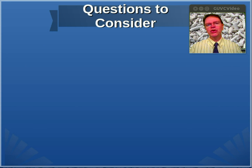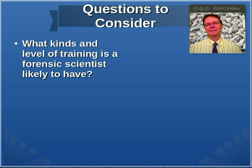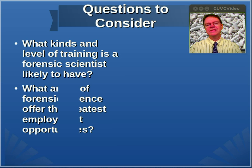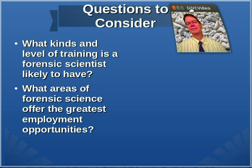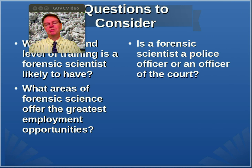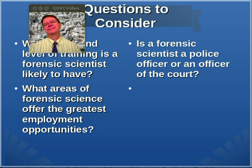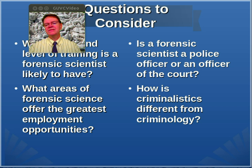Here are some questions for you to consider on your own: What kinds and level of training is a forensic scientist likely to have? What areas of forensic science offer the greatest employment opportunities? Is a forensic scientist a police officer, an officer of the court, or none of these? And how is criminalistics different from criminology?